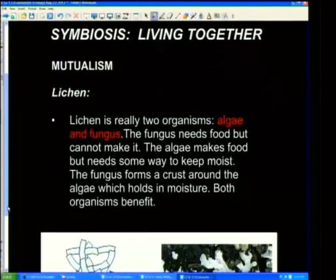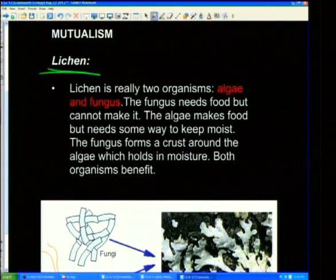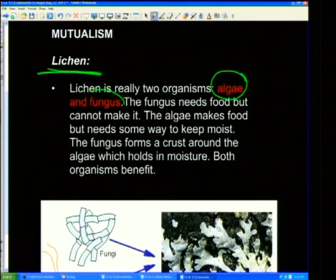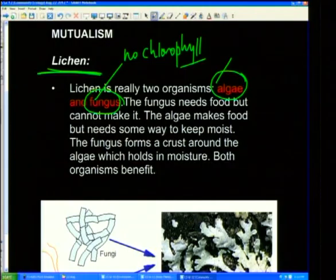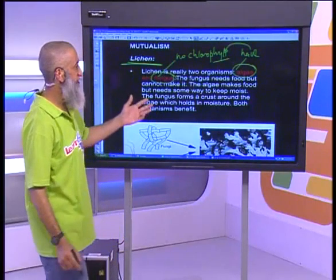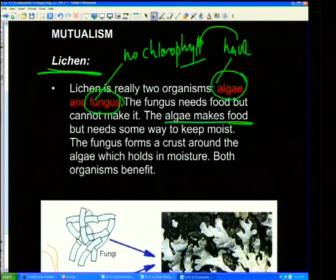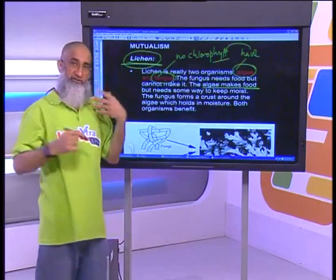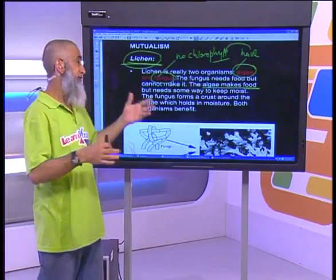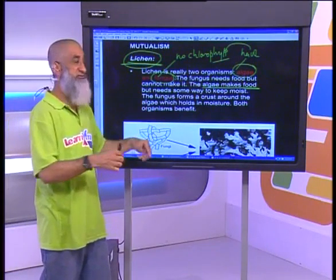Let's look at an example. A beautiful example from your grade 11 work is lichens. Lichens are actually two organisms in one — they are made up of algae and fungi. Fungi have no chlorophyll, therefore they cannot manufacture their own food. Algae, on the other hand, generally if they're green algae, they would have chlorophyll and can manufacture their own food. So the algae makes the food. Now, lichens is an example of mutualism because there is a mutualistic relationship between algae and fungus.